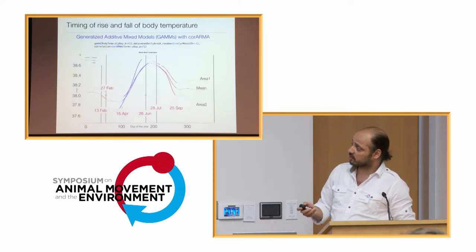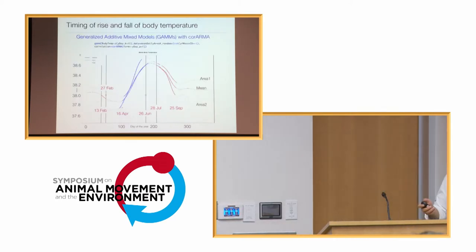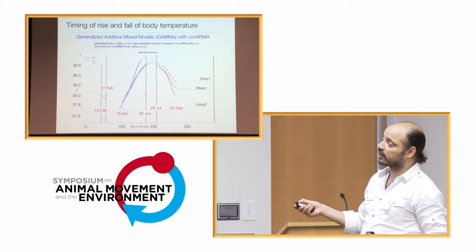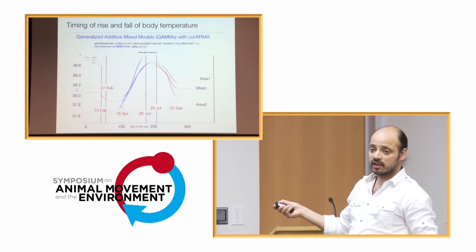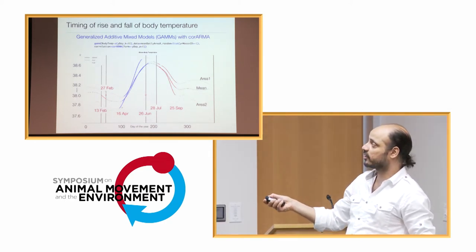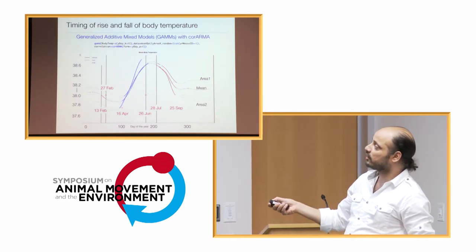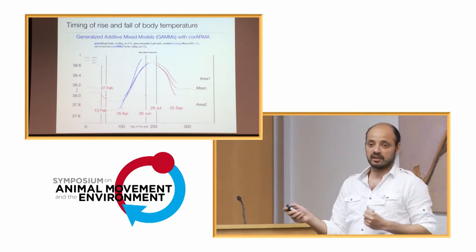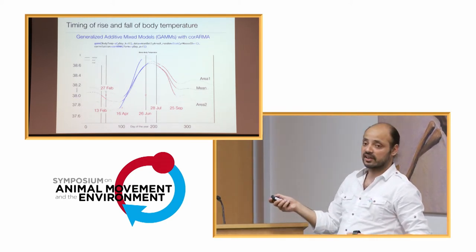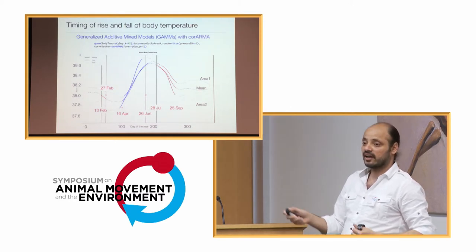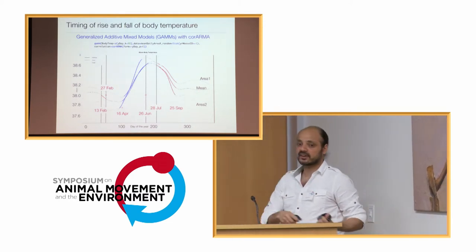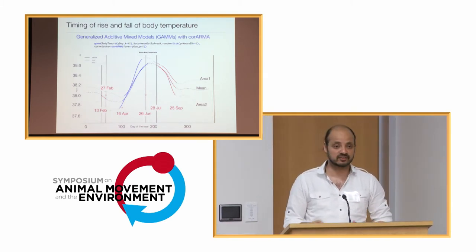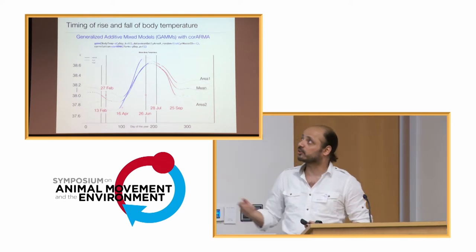I ran some GAMs to identify the day when temperature started to rise in both areas — this is the mean of both areas combined. There is a slight difference in the days when temperature started to rise on average for individuals in each area, and then when it stopped rising and when it started to drop again. This has implications for relating these temperature patterns to when animals start migration or when they start moving more or less.